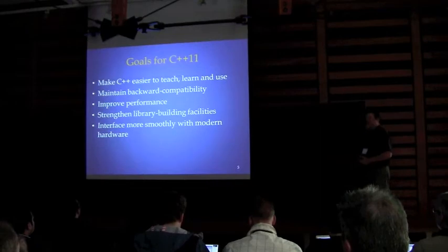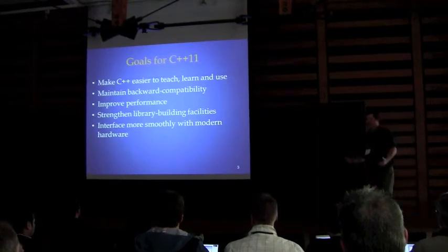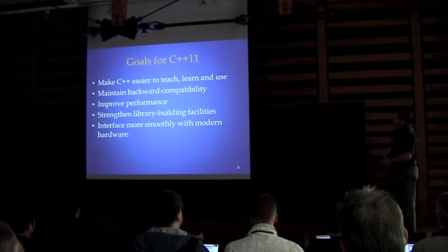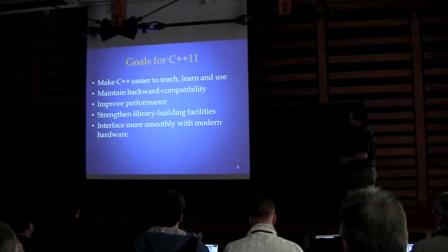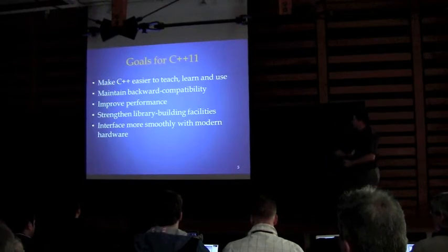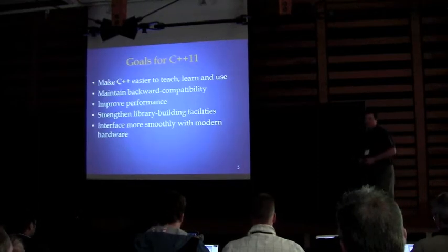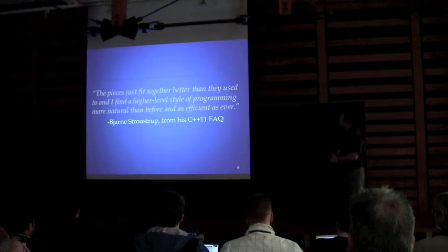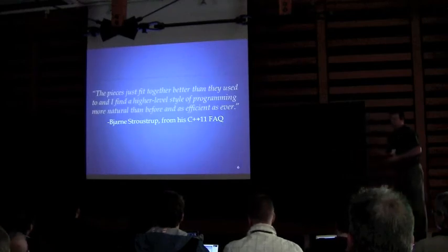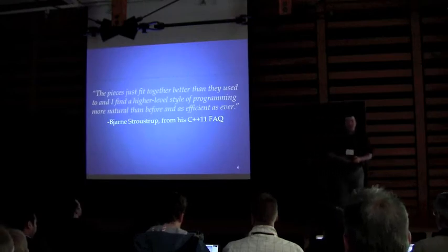The goals also include strengthening library building facilities by adding new keywords to make it more precise when you specify, if we pass to a subclass, what sort of things it is allowed to do. Another goal is to interface more smoothly with modern hardware — which is essentially a euphemism for supporting concurrency, which is what modern hardware on mobile devices is really for. Bjarne says the pieces just fit together better than they used to, enabling a higher level style of programming that's more accurate and as efficient as ever.